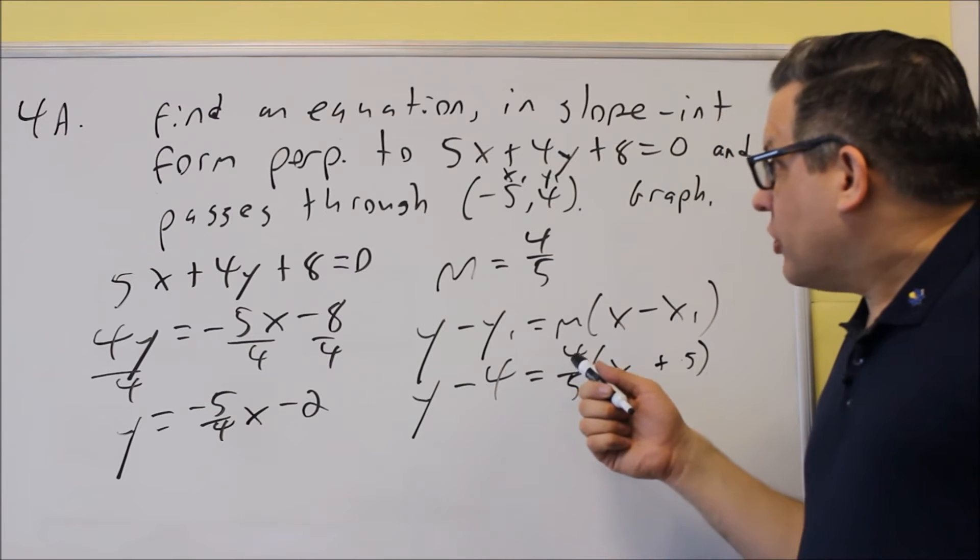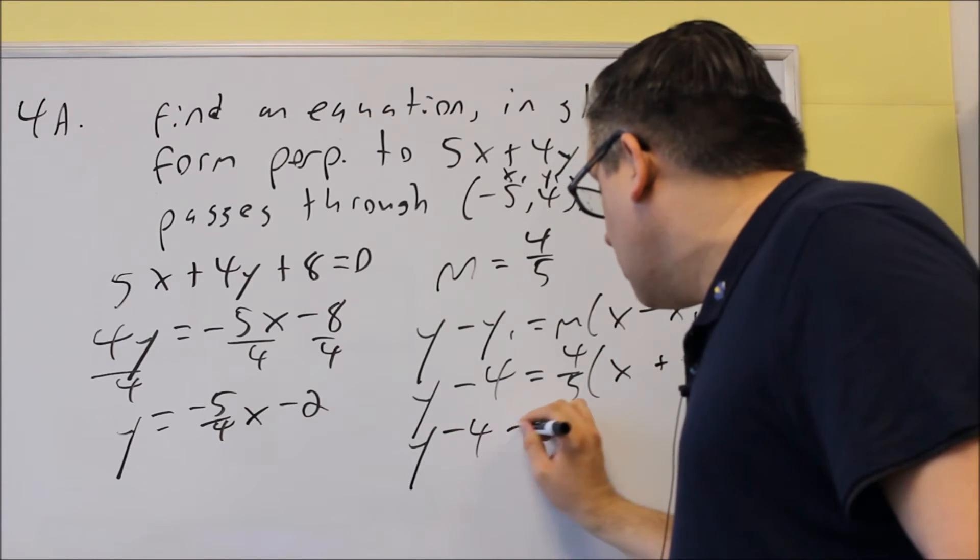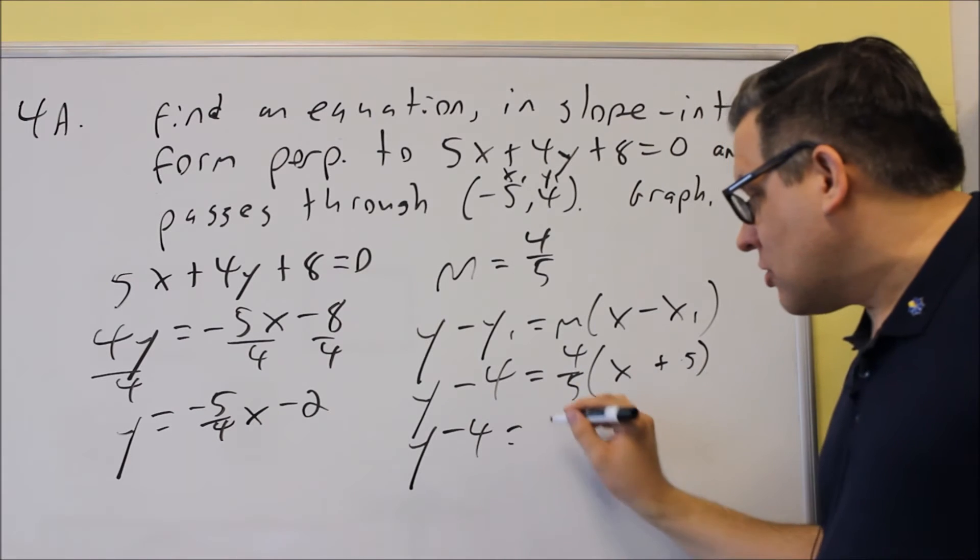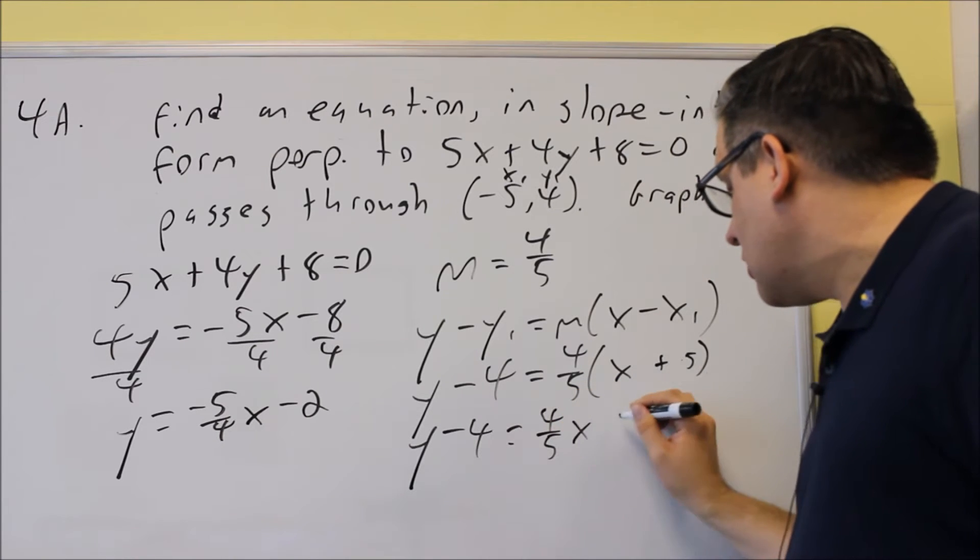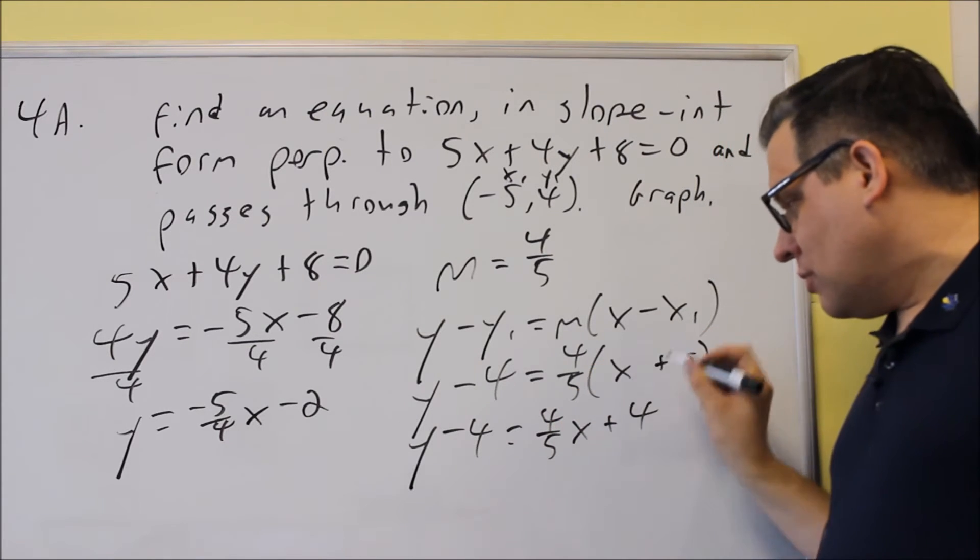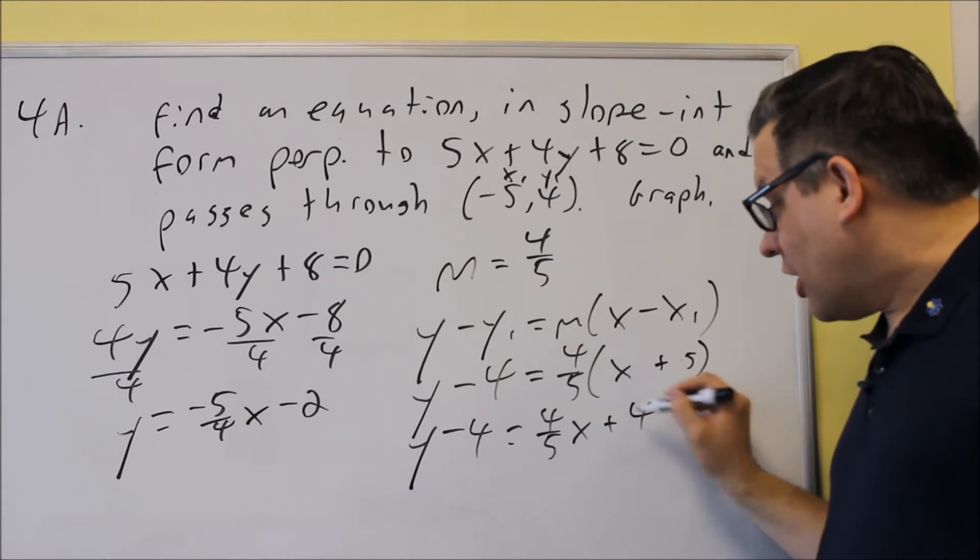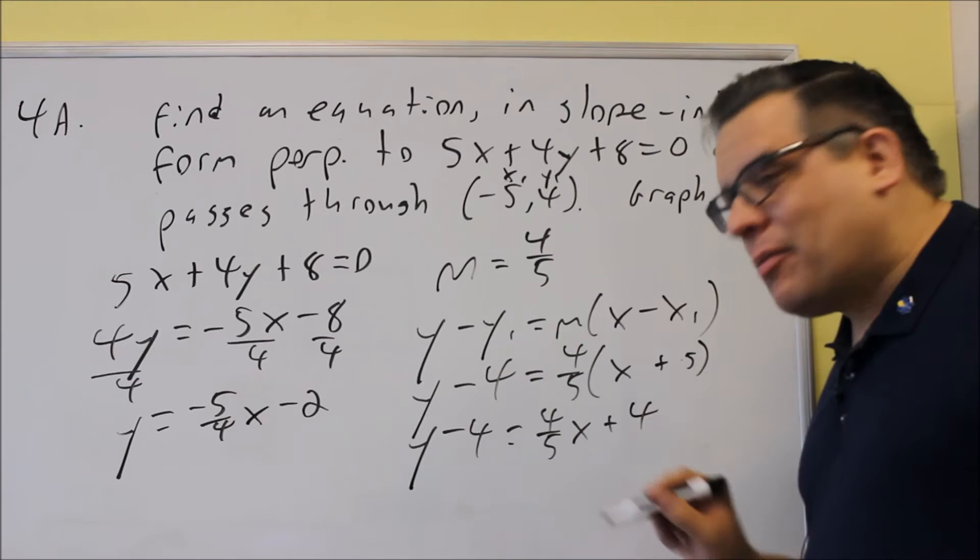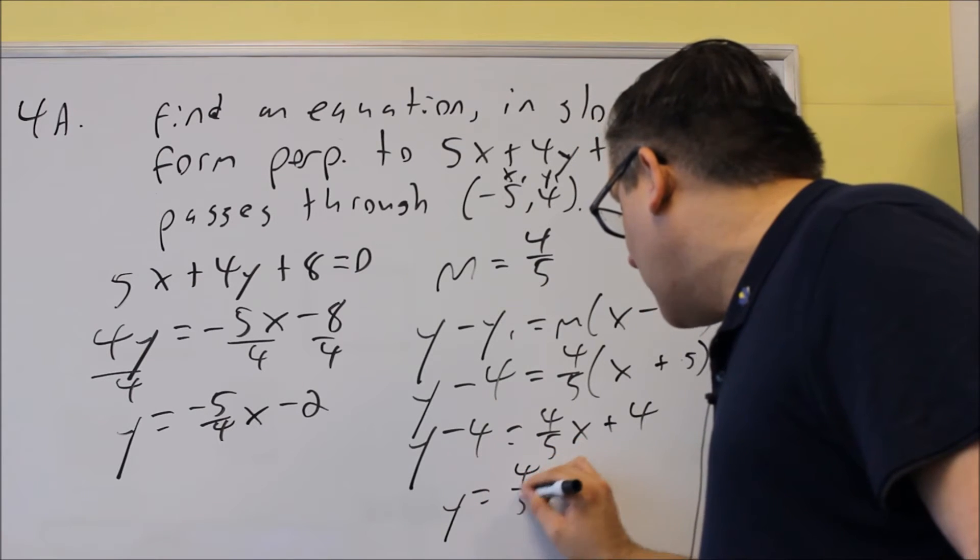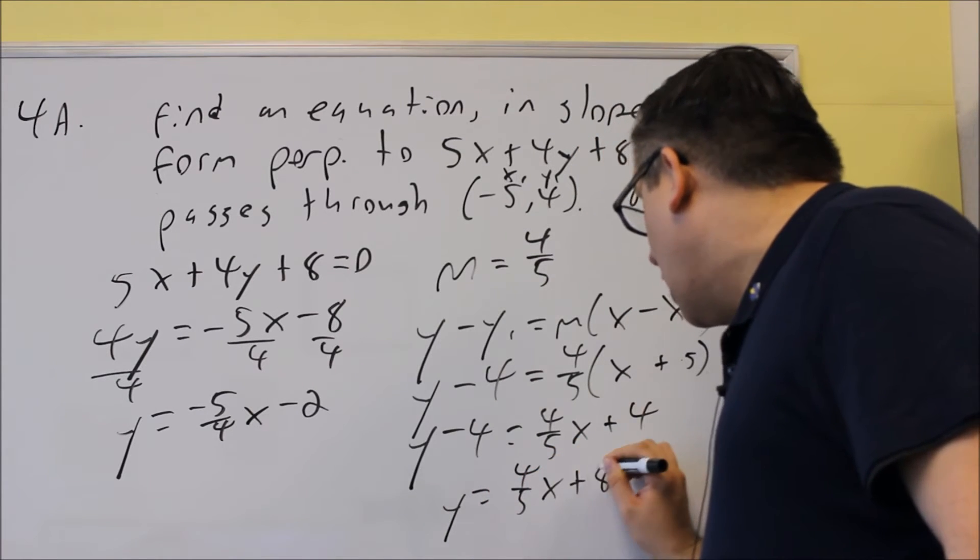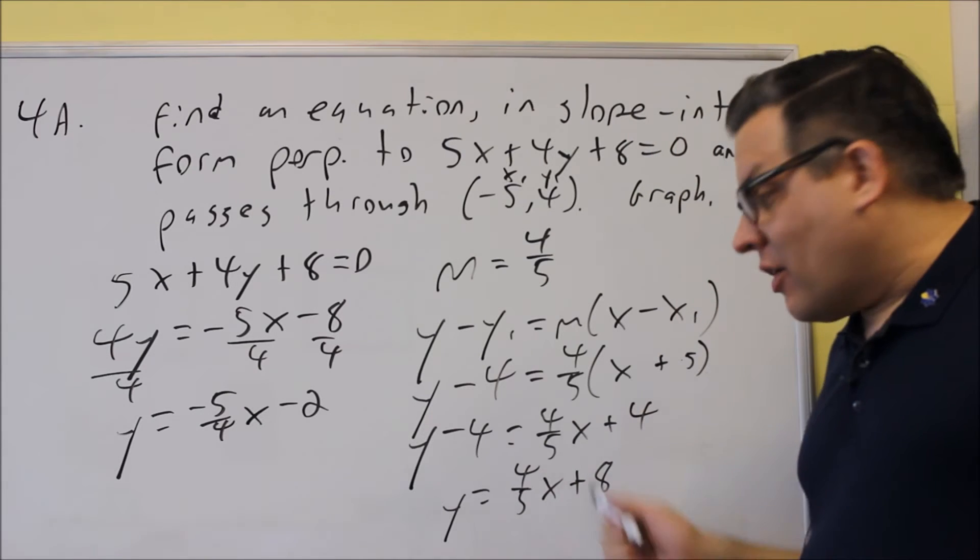Last thing we're going to do is we need to solve for y. So I'm going to distribute the 4 fifths. So I'm going to do 4 fifths x plus 4. So I have 4 fifths times 5 over 1. The 5s cancel, and I get the plus 4 there.